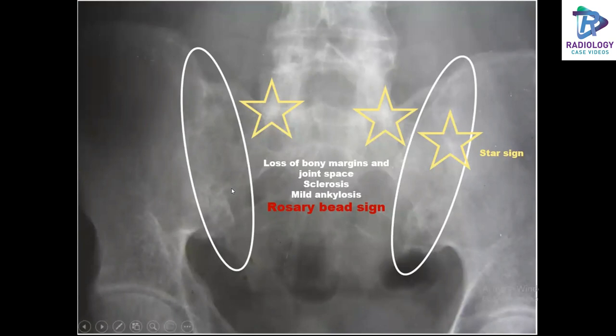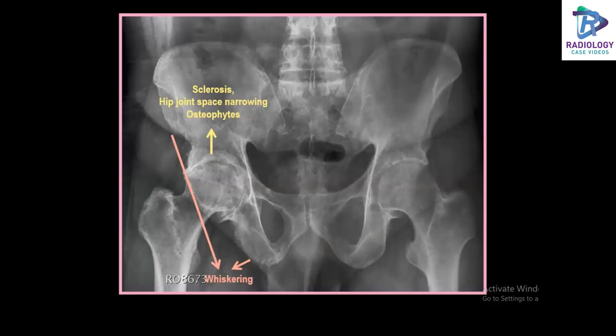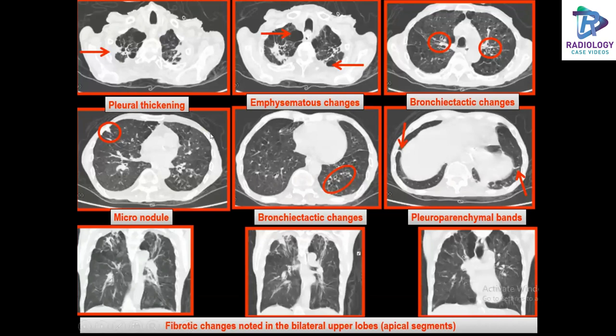A frontal radiograph of the pelvis shows sclerosis, hip joint space narrowing, and osteophytes with whiskering in the right hemipelvis — findings seen in ankylosing spondylitis. Findings in the respiratory system in a patient with AS include pleural thickening, emphysematous changes with bullae, bronchiectatic changes, micronodules, pleuroparenchymal bands, and fibrotic changes in the bilateral upper lobes, predominantly in the apex.